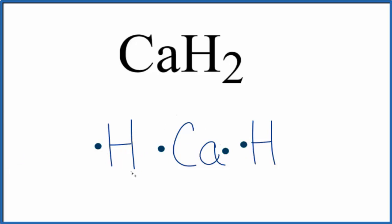We have our calcium and our hydrogen ions here, our hydride ions. Calcium has two valence electrons, then each hydrogen has one.